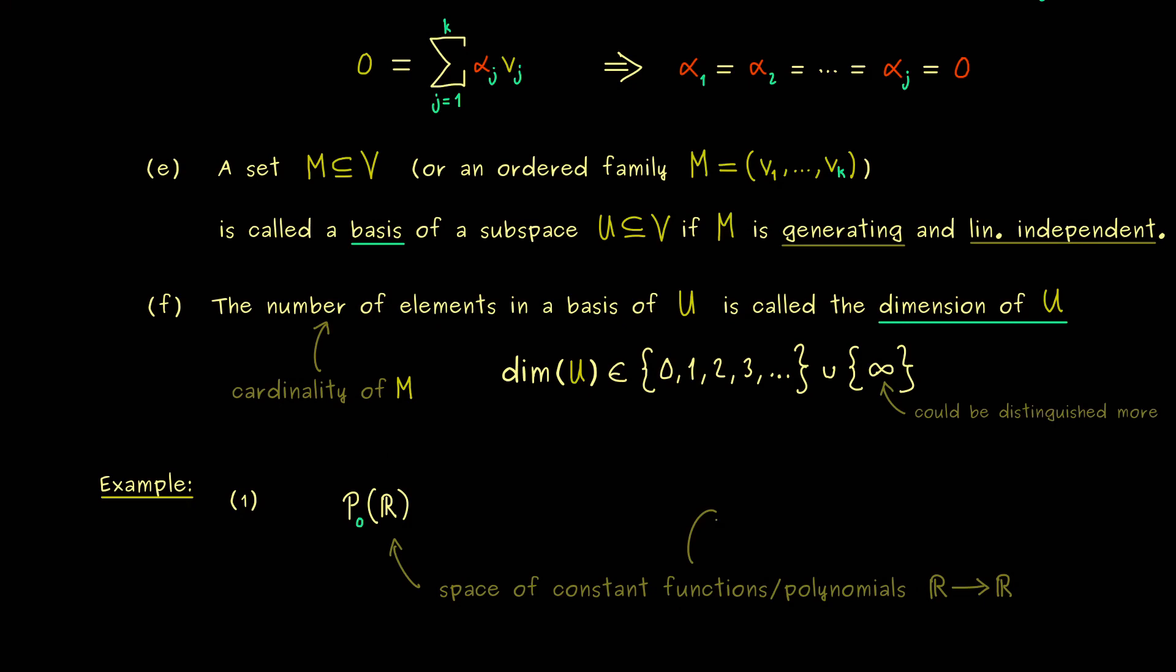Therefore it's not hard at all to write down a basis. So let's say we have a basis M given as an ordered family. And this one needs only one element. And we can say we choose the element that is x is sent to 1. So it's the constant function that has the output 1 for each input.